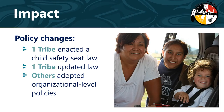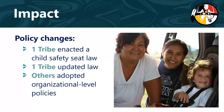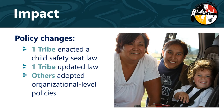In terms of policy changes, one tribe enacted a tribal child safety seat law. One tribe updated its law to align with expert child safety seat recommendations. Other tribes adopted organization-level policies around child safety seat use. For example, in one community, the Head Start program implemented a policy that children must arrive in a child safety seat — a rule enforced by one of the teachers who greets kids as they arrive to school.